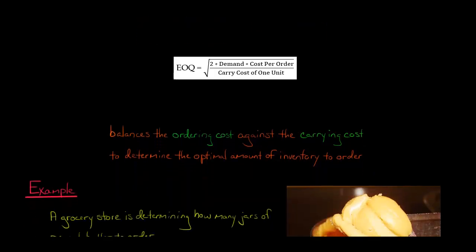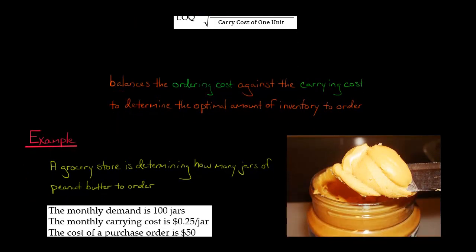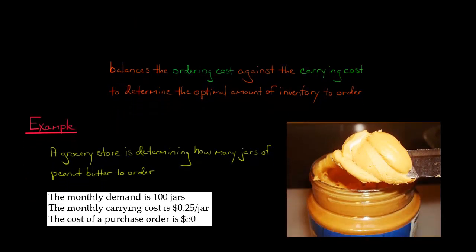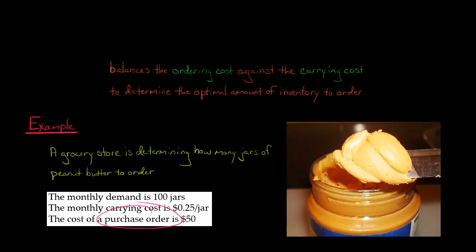Let's jump into an example. Say we have a grocery store trying to figure out how many jars of peanut butter to order. The monthly demand is 100 jars of peanut butter. The carrying cost — the holding cost of this inventory — is 25 cents per jar. And every time there's a purchase order, it costs $50. That's not the actual cost of the peanut butter, but all the ordering costs associated with submitting the purchase order, paying the vendor, and so forth.